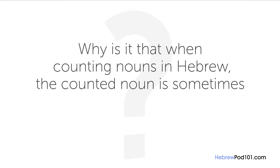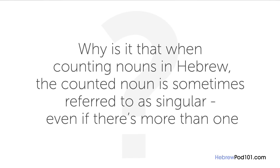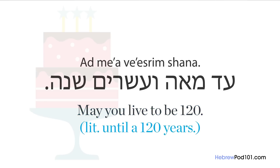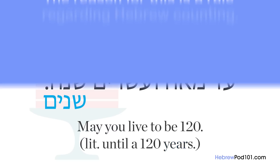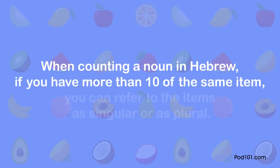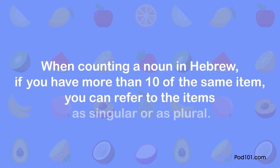The question for this lesson is: why is it that when counting nouns in Hebrew, the counted noun is sometimes referred to as singular, even if there's more than one? You may have heard the Hebrew birthday greeting 'adme'a v'isrim shana' — 'may you live to be 120,' literally 'until 120 years.' The word 'shana' (year) is singular rather than plural 'shanim.' When counting a noun in Hebrew, if you have more than 10 of the same item, you can refer to the items as singular or plural — it's your choice. Ten items or fewer will always be plural.